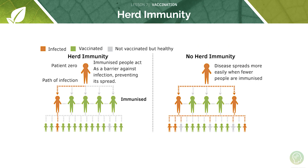Vaccination also introduces the concept of herd immunity. As we vaccinate more people — shown here as green people who are vaccinated versus orange people who are infected — the immunised people act as a barrier against infection spread. We can't vaccinate everyone because some people don't want to be vaccinated or may not be medically able to, such as immunocompromised people or very young babies. Herd immunity keeps them protected.